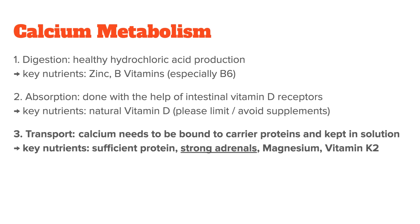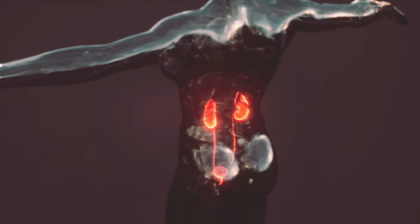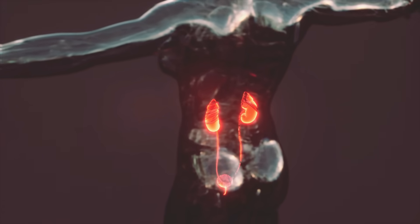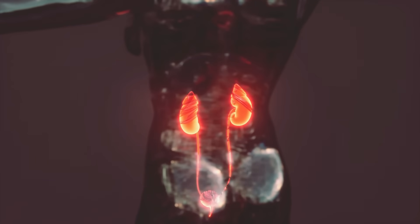Step three is different. Not only do you need sufficient protein and vitamin K2 intake to ensure that calcium can be bound to carrier proteins, but you also need strong adrenal glands. Strong adrenals, together with magnesium, keep calcium in solution so it doesn't harden and form deposits. The way your adrenals do this is by controlling the levels of potassium and sodium in your body, both of which act as solvents of other minerals.